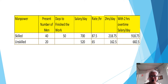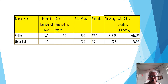The work can be finished with this number of men in 50 days. For the skilled worker being paid at $700 per day, with 2 hours overtime, that would mean $918.75. For the unskilled worker being paid at $520 per day with 2 hours overtime per day, that would mean $682.50.